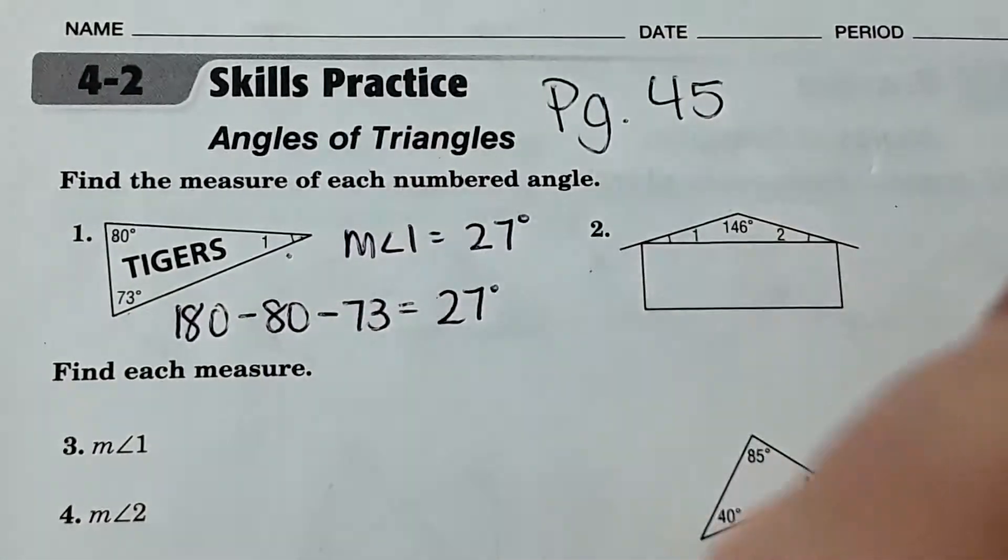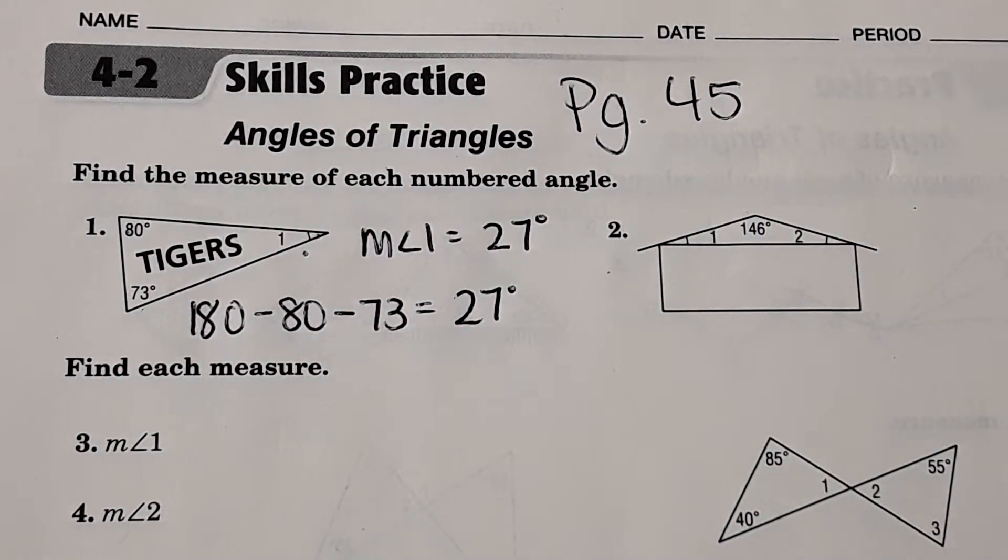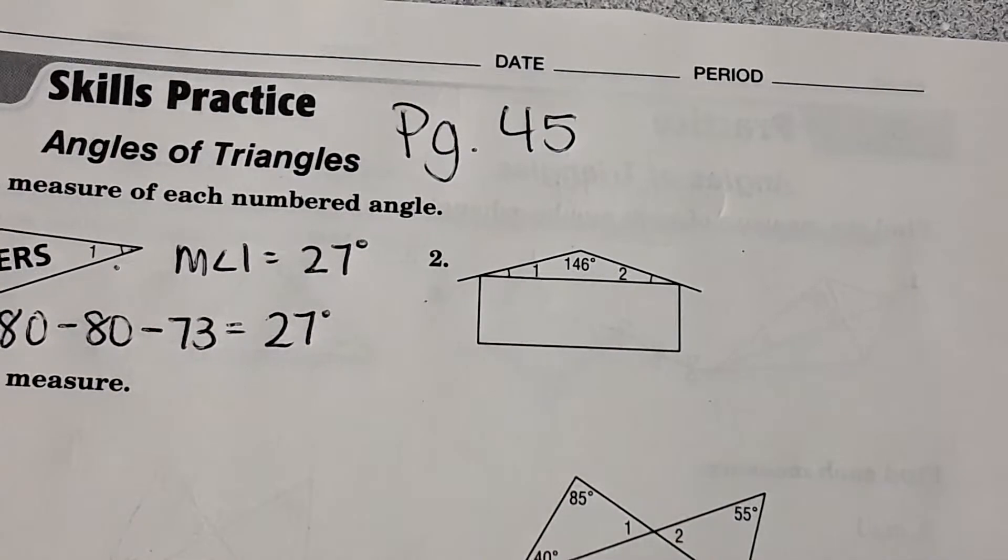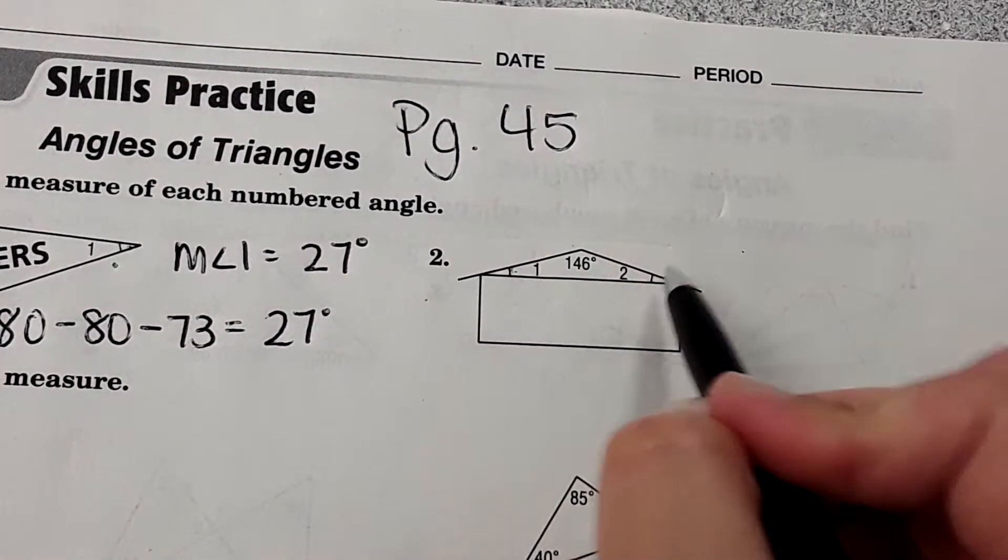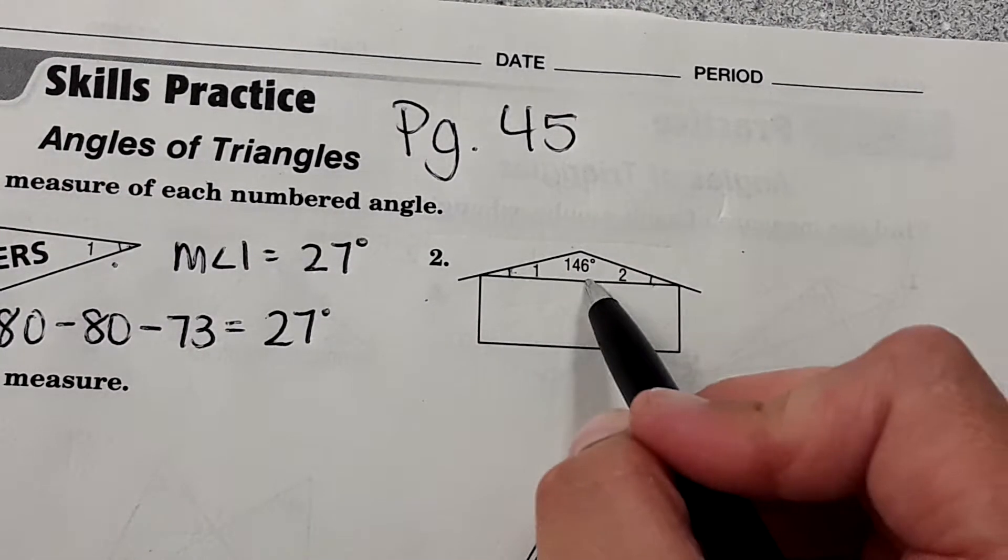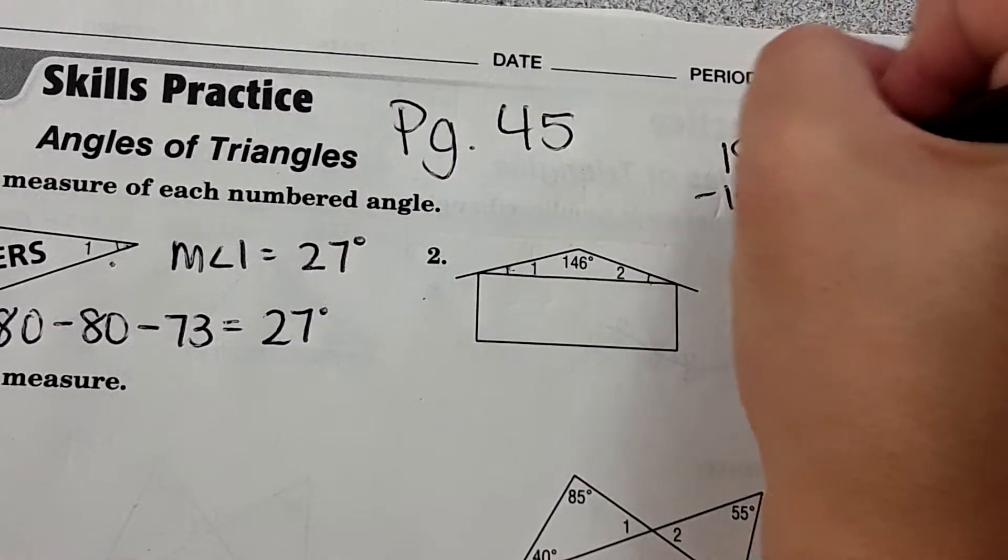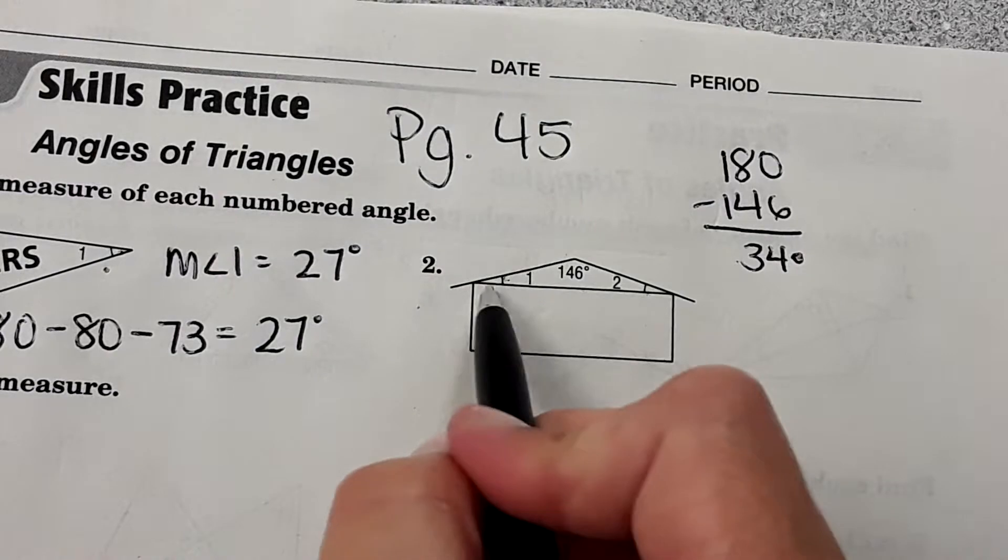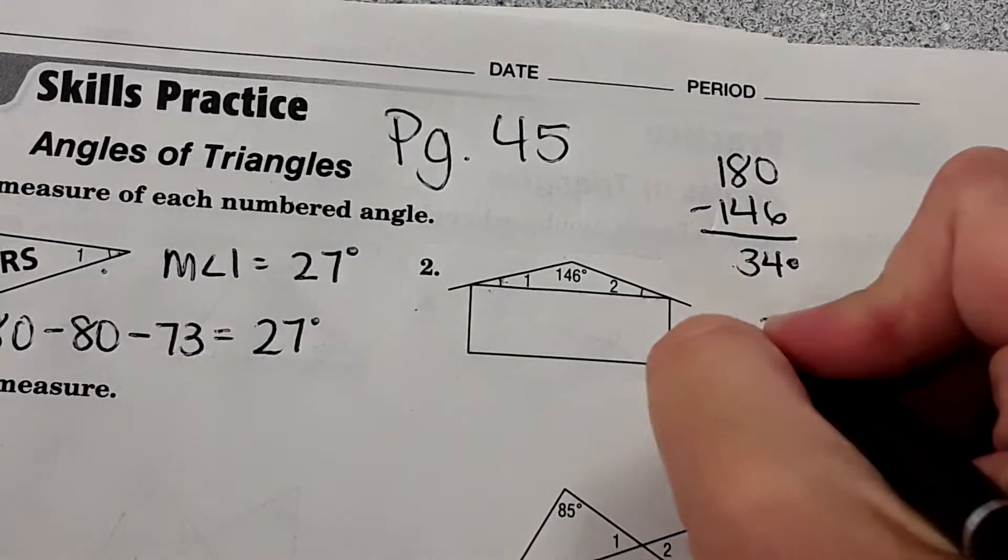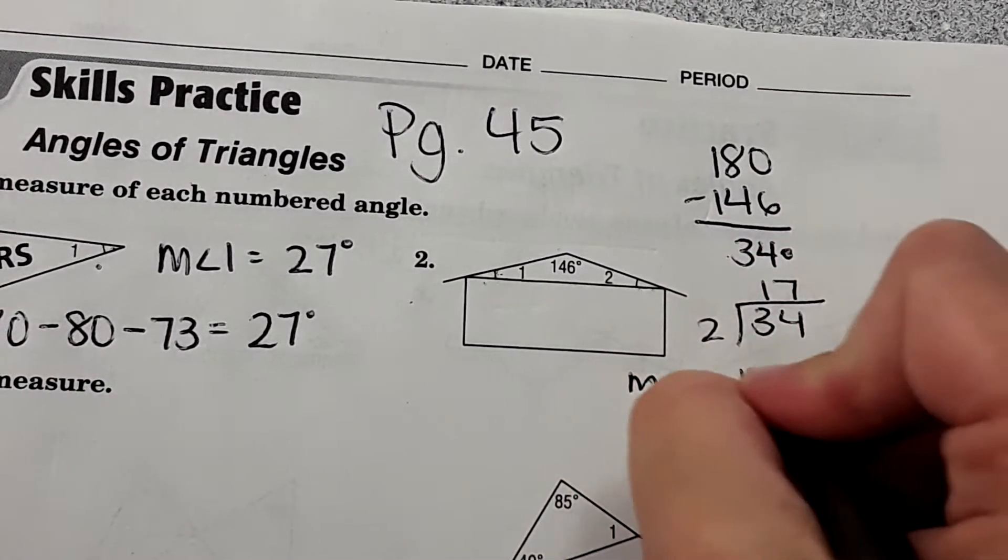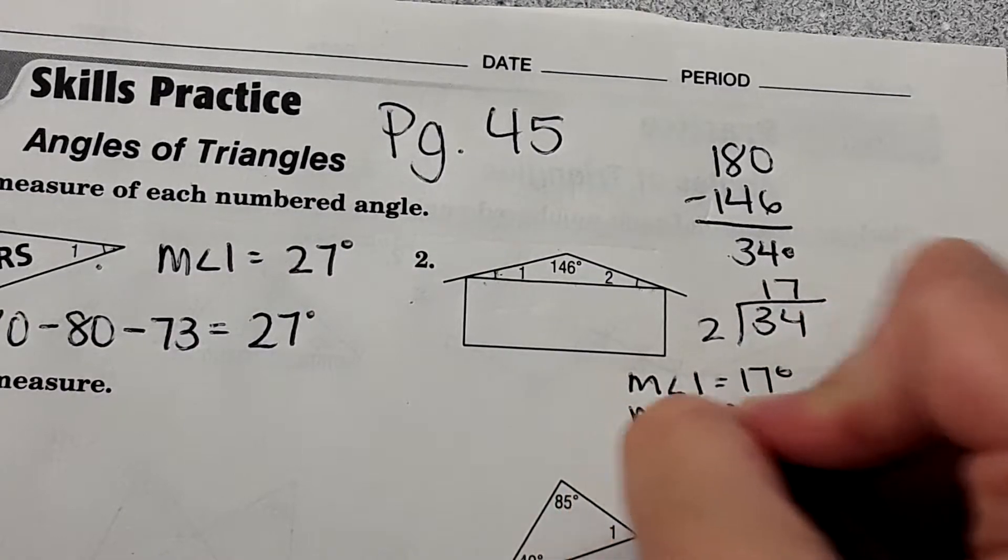And the next one, number two, here it shows us an isosceles triangle. We know it's isosceles because of these little marks—it says that these two angles are the same measure. What we can do is 180 minus 146 to get 34 degrees, but that needs to be divided evenly among those two angles there. So 34 divided by 2 will give you 17. So measure of angle 1 equals 17 degrees and measure of angle 2 also equals 17 degrees.